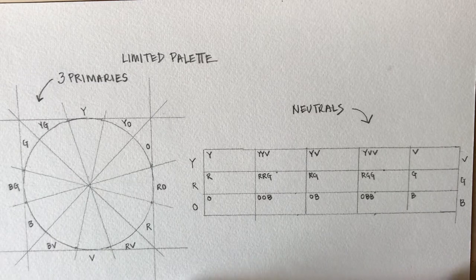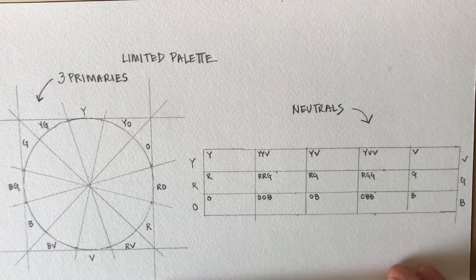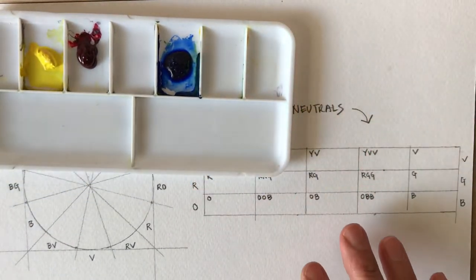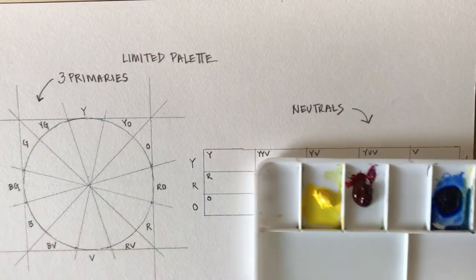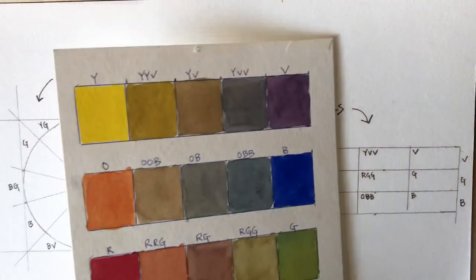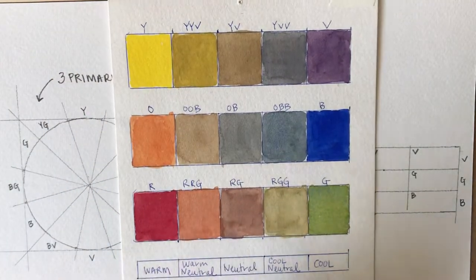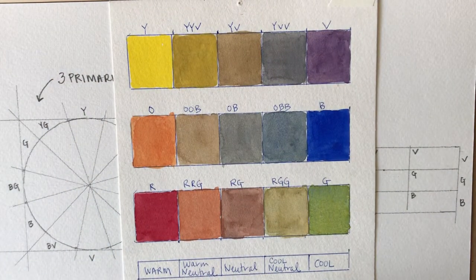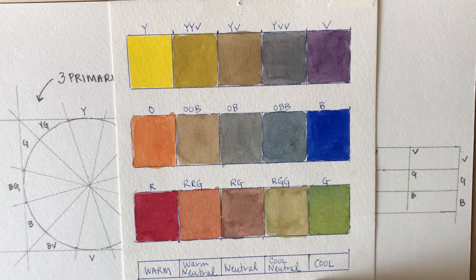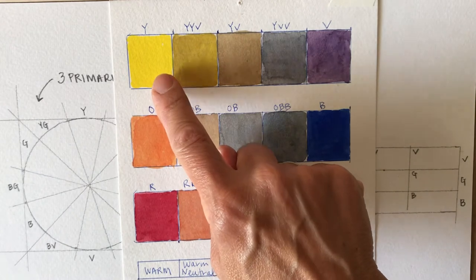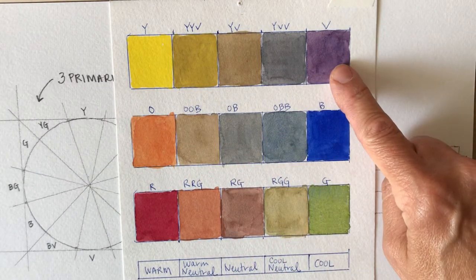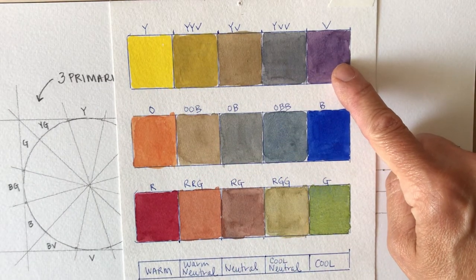But just three primaries like you have here can also result in an incredible array of neutrals. I'm going to show you that all of these neutrals, these being colors that are basically when you take a primary color like yellow and mix it with its complement, which is across the color wheel.